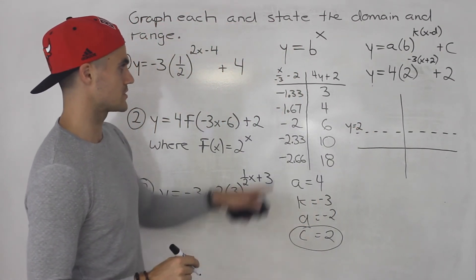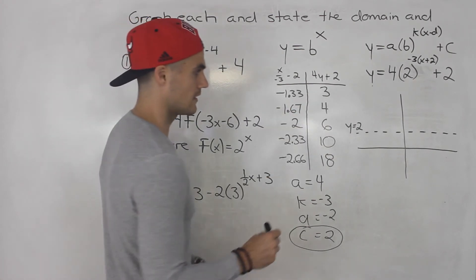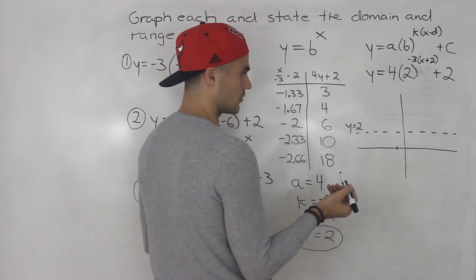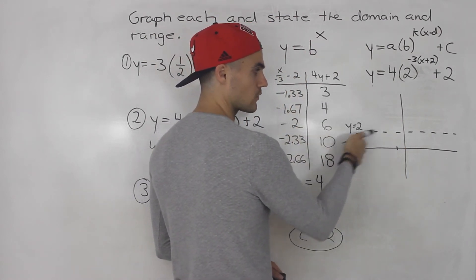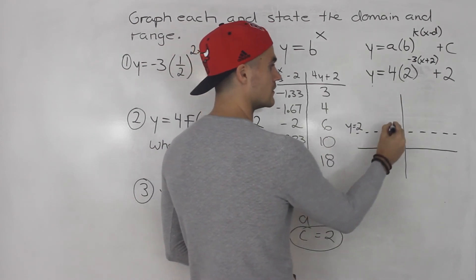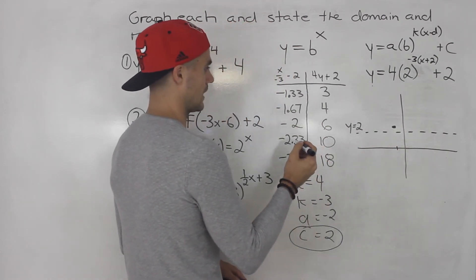Then from here you can just plot the points. So an x value negative 1.33, a y value of 3, that's going to be where? So right there would be maybe negative 1.33 and then a y value of 3, where is it relative to the horizontal asymptote? Well a y value of 3 is above it so it's going to be like here.